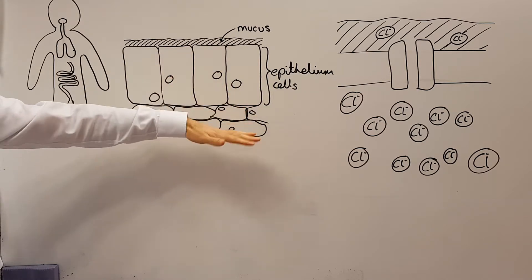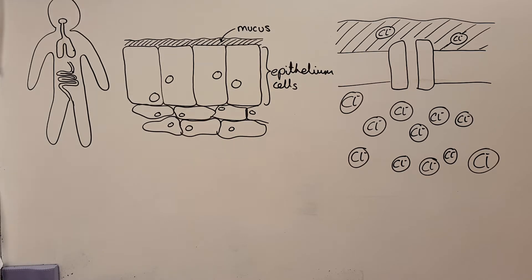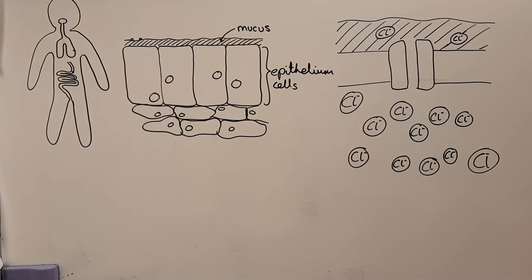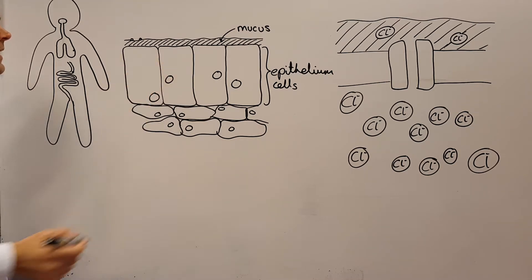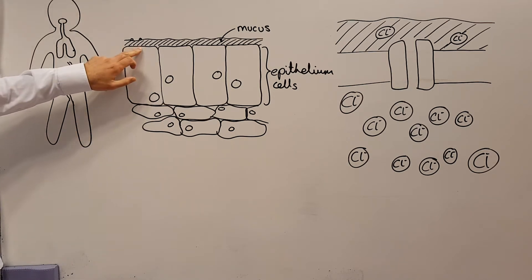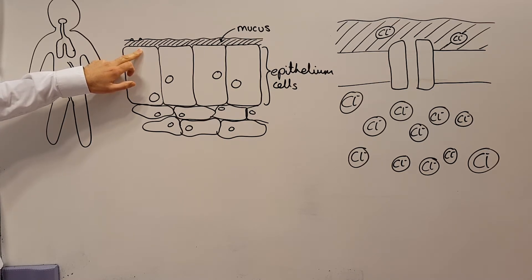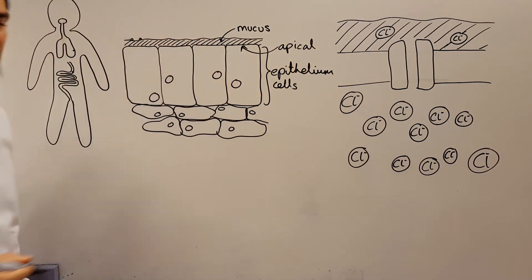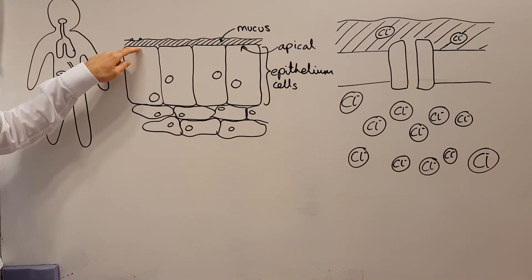Below the epithelium cells are the rest of the cells of the lungs or intestines. The purpose of the mucus is to catch bacteria that might come in; the mucus moves along the membrane and eventually leaves the body. That's why if you've got a cold you're coughing up mucus — it's filled with bacteria. At the end of the cell that makes contact with the mucus — the apical end — that's what we call it.